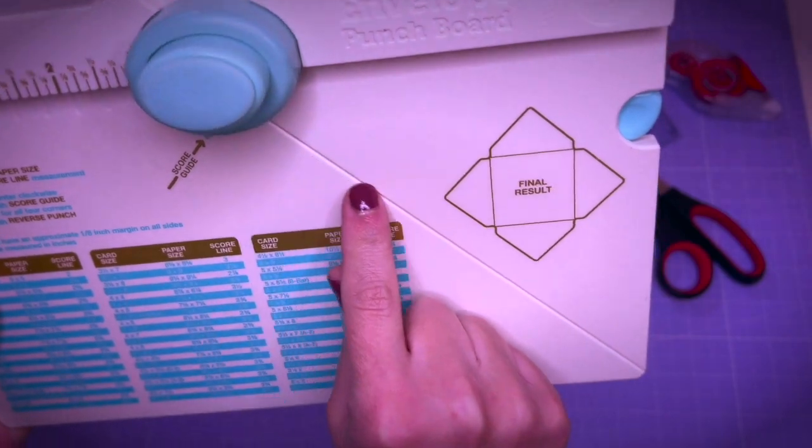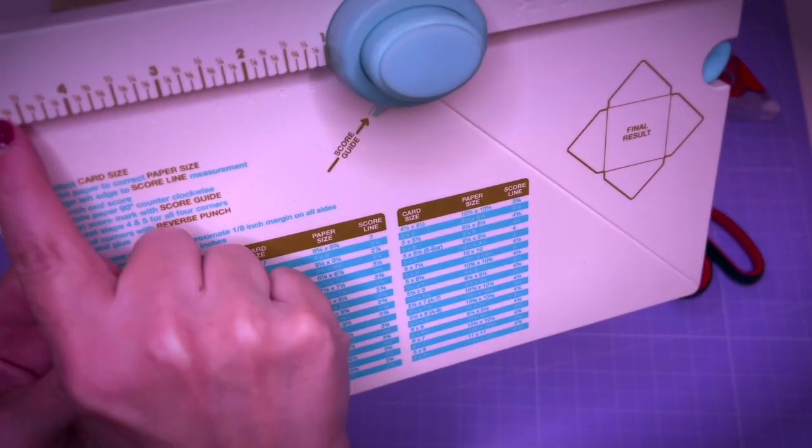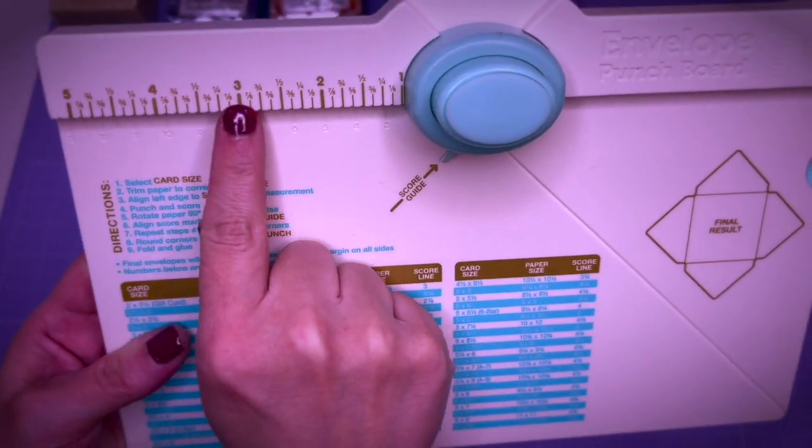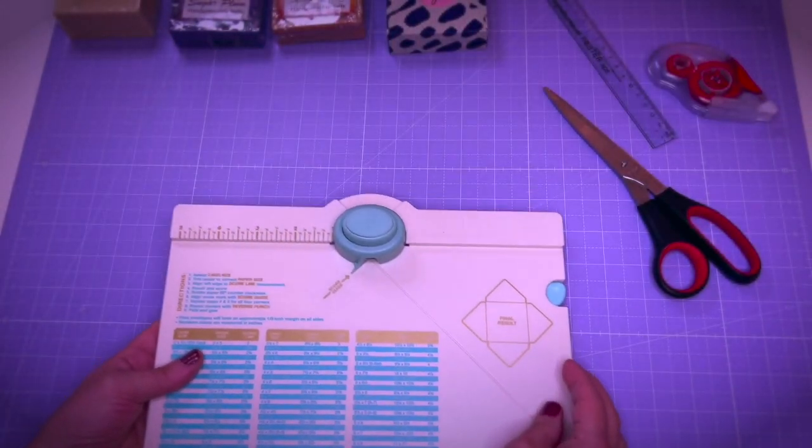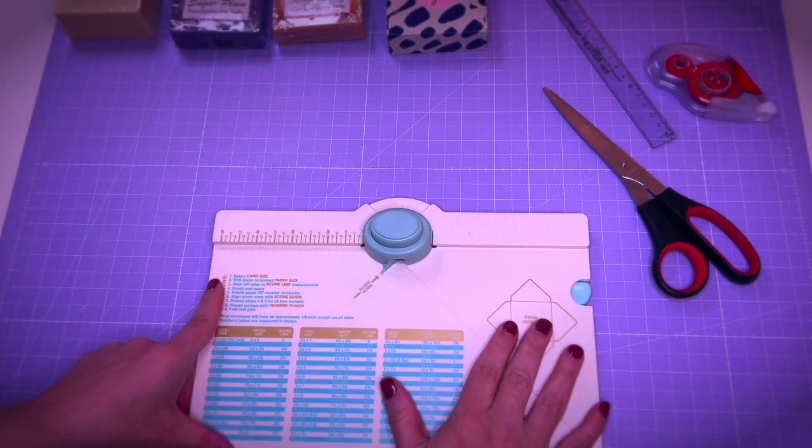There is a punch here on top and a score line. Over here are the measurements in inches and centimeters. We need to determine the measurements that we need with a little calculator created specifically for this tool.